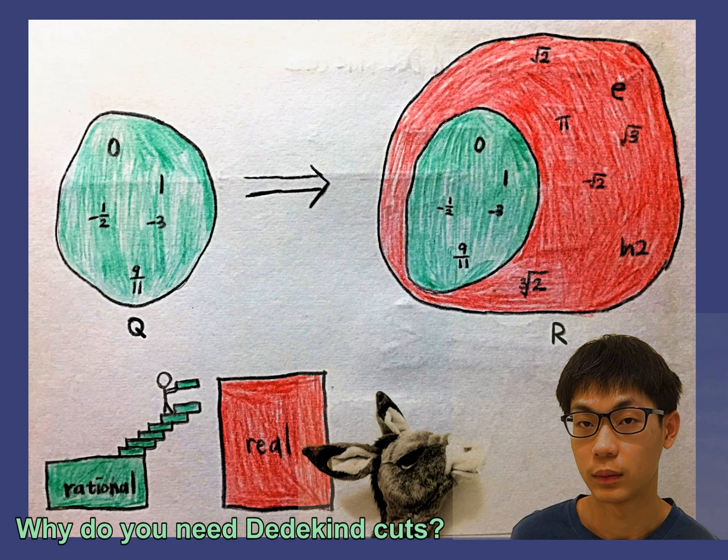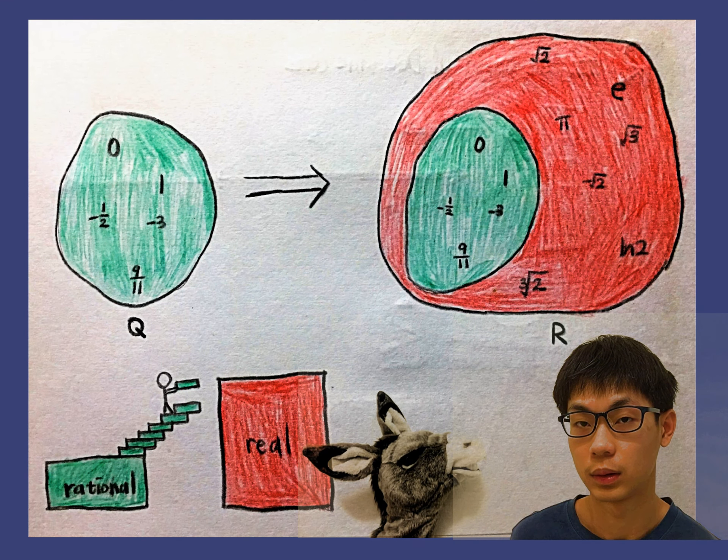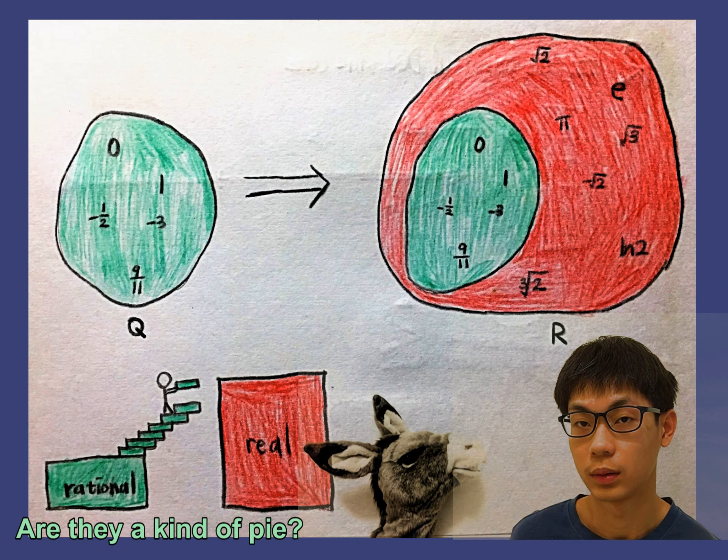Why do you need Dedekind cuts? Are they a kind of pie?